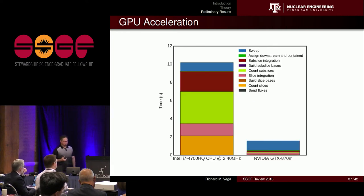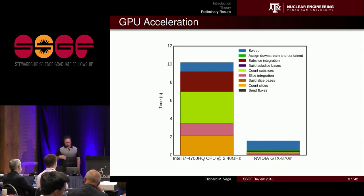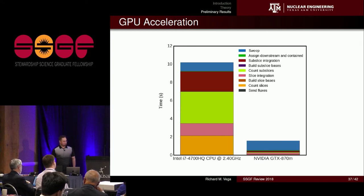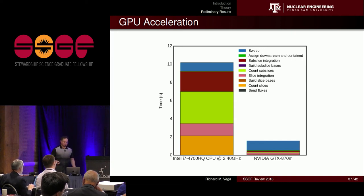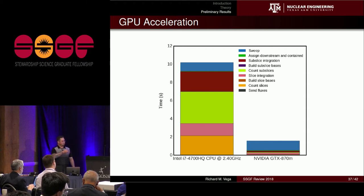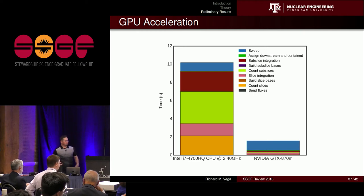For GPU acceleration, there is a challenge with LDFM and the slice balance approach: slices are unique to every angle in the quadrature set. With 100,000 cells, 1,000 angles, and hundreds of kilobytes of volume and surface integrals and material properties per slice, memory runs out quickly. So the approach is to compute, use, and discard the slice data each sweep. If slice construction dominates runtime — roughly 90 percent — a standard gaming GPU can knock that down significantly. If pipelined so the CPU handles the transport solve while the GPU constructs slices and subslices in the background, the overhead could be hidden entirely.